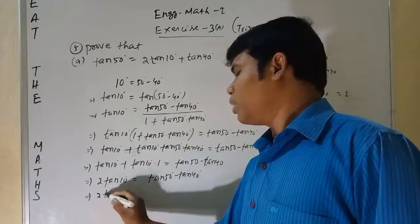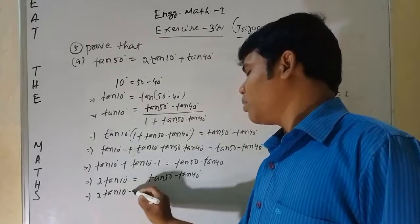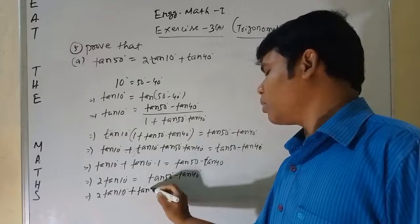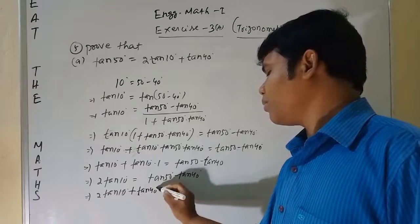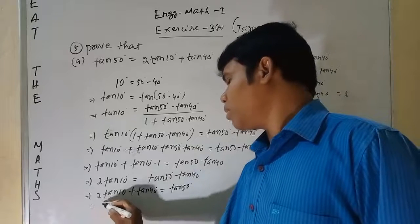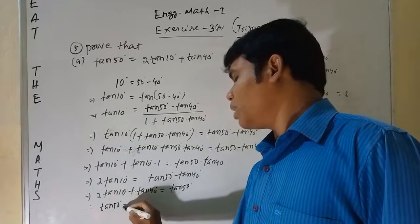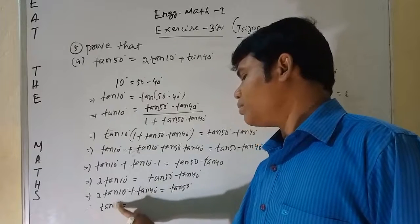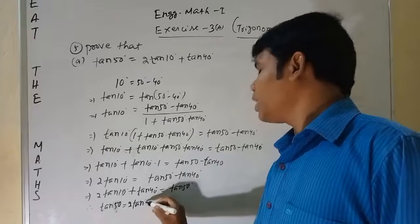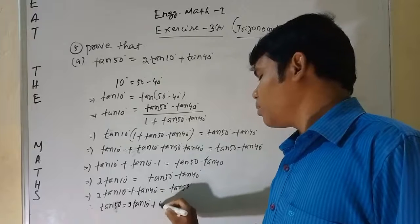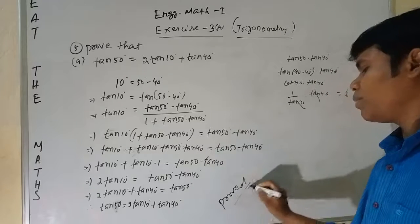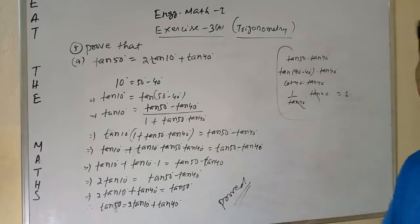Cross-multiplying and rearranging, noting that tan(50°)·tan(40°) = tan(90°−40°)·tan(40°) = cot(40°)·tan(40°) = 1, we simplify to get 2tan(10°) + tan(40°) = tan(50°). Therefore, tan(50°) = 2tan(10°) + tan(40°). Proved. Pause the video and note it down.